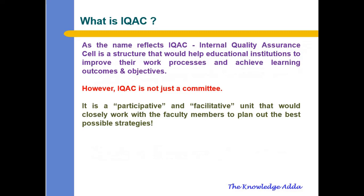What is IQAC? As the name reflects, IQAC — Internal Quality Assurance Cell — is a structure that helps educational institutes improve their work processes and achieve learning outcomes and objectives. IQAC is not just a committee; it is a whole function that plans your outcomes and strategy — how, by which strategy, we can improve our educational quality and system. It is a participative and facilitative unit that closely works with faculty members, students, management, and administration to plan the best possible strategy to grow the institute and provide quality education.